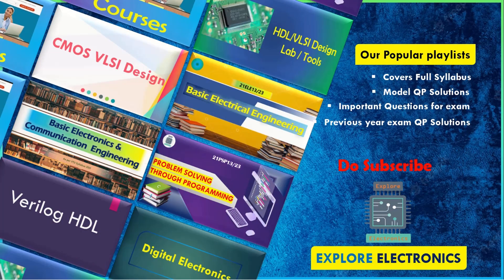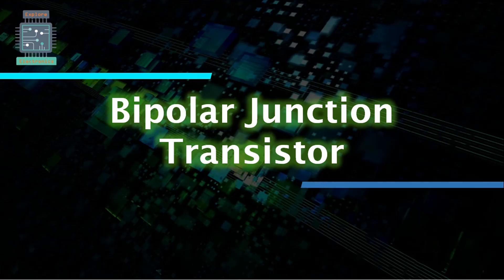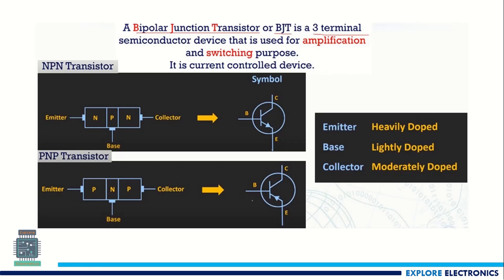Hello everyone, welcome back to Explore Electronics. In this video let us see bipolar junction transistor. This bipolar junction transistor is generally called as BJT. It is a three terminal semiconductor device. This semiconductor device can be used as an amplifier for amplification purpose and also as a switch for switching purpose. These are two main applications of this BJT and it will be called as a current control device.